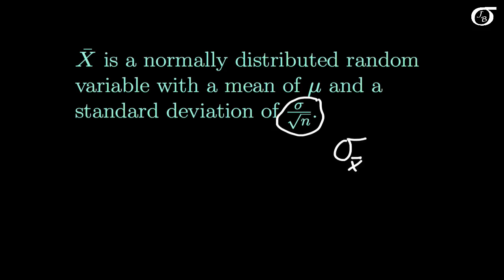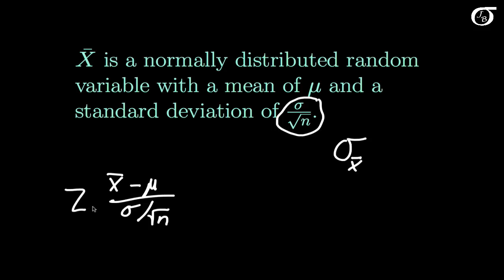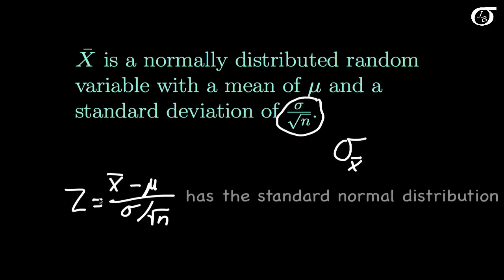If we so desired we could standardize x bar. We could take x bar minus its mean, which is mu, and divide by its standard deviation, which is sigma over the square root of n. We could call this z, because this random variable is going to have the standard normal distribution.